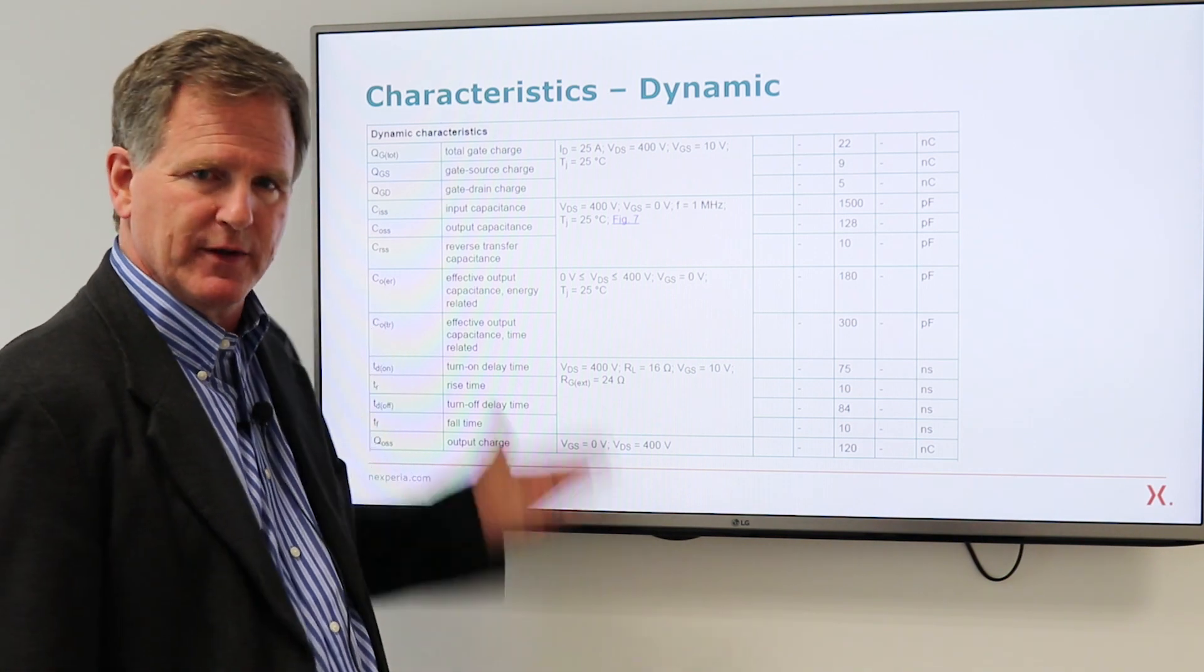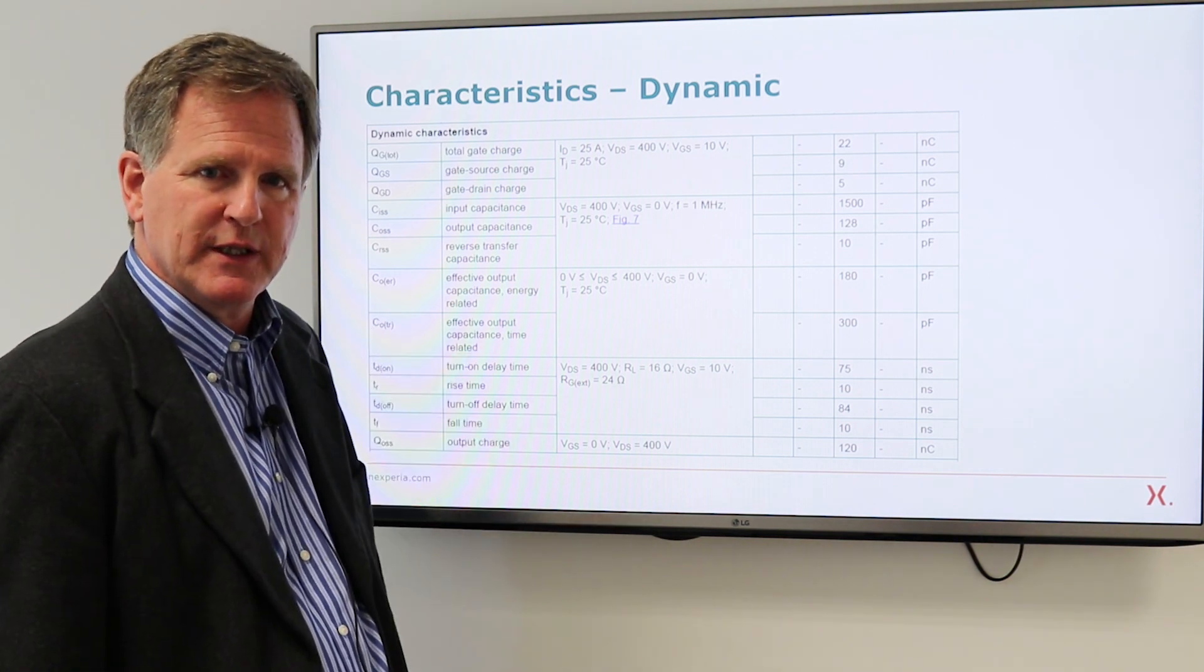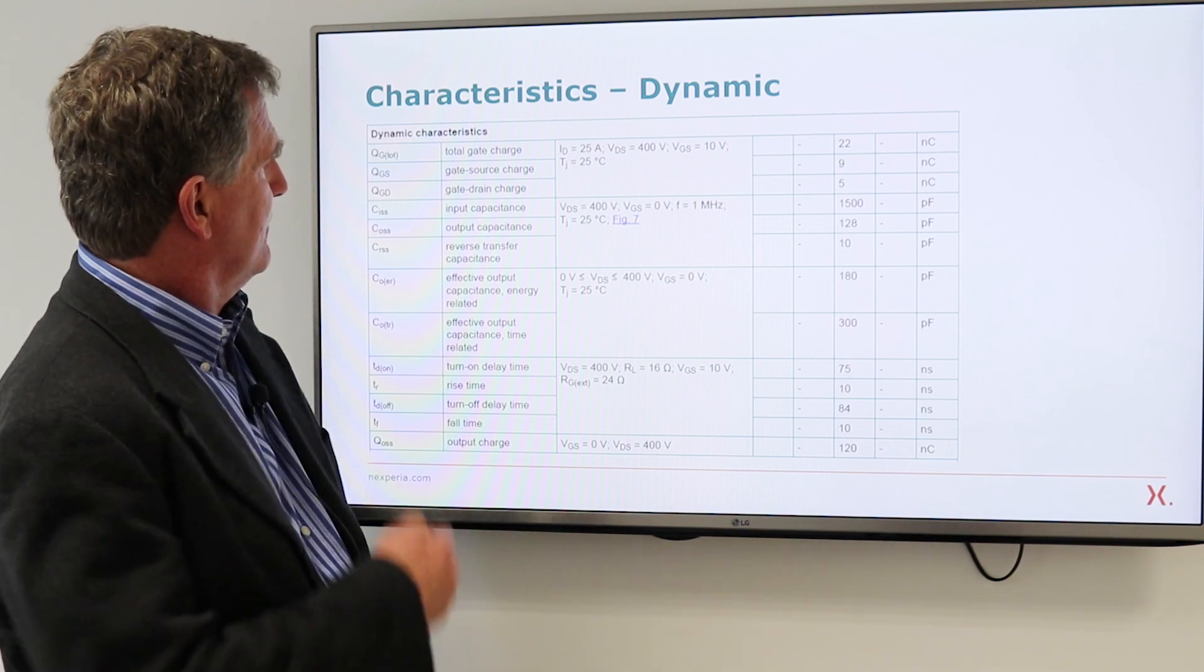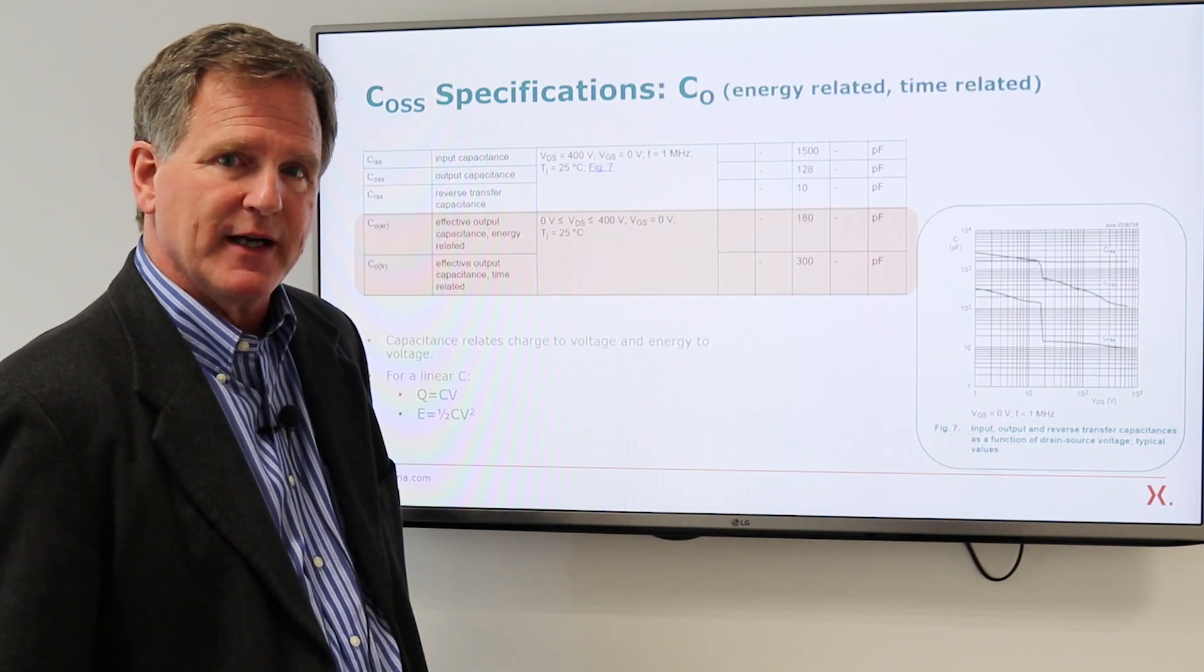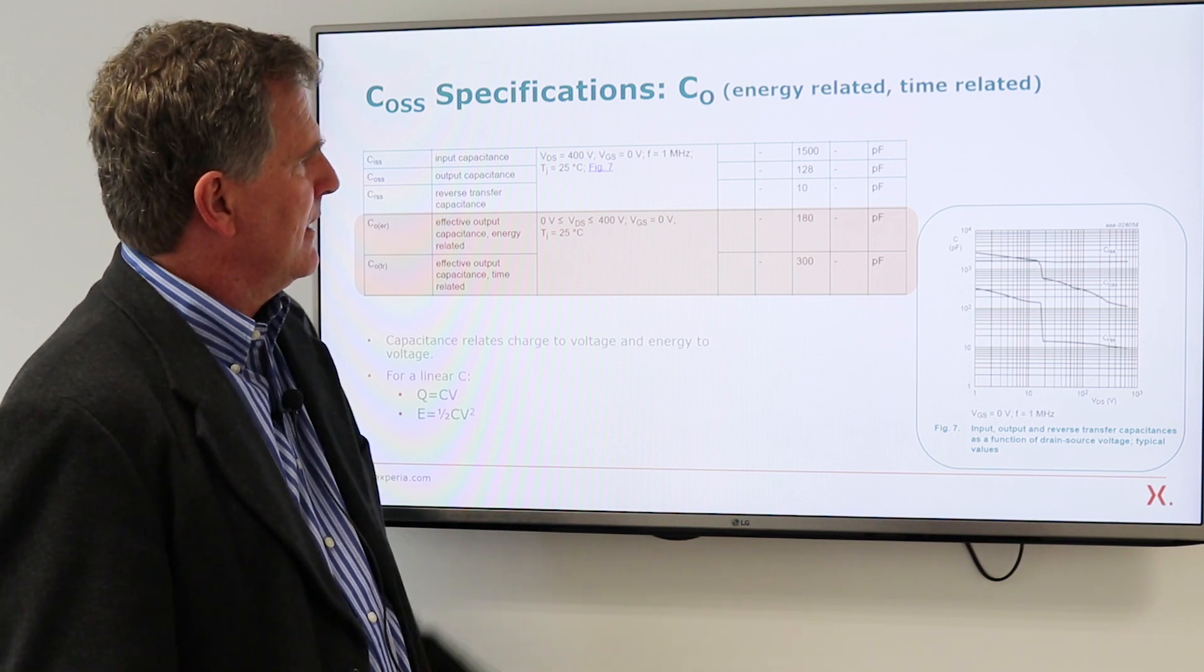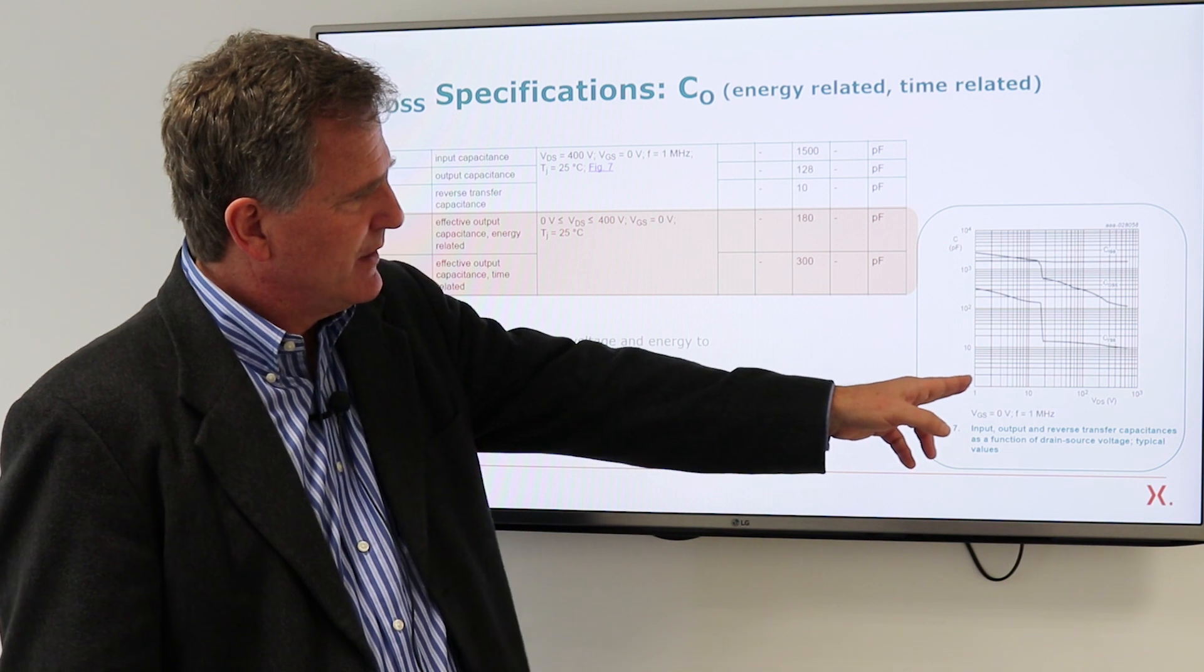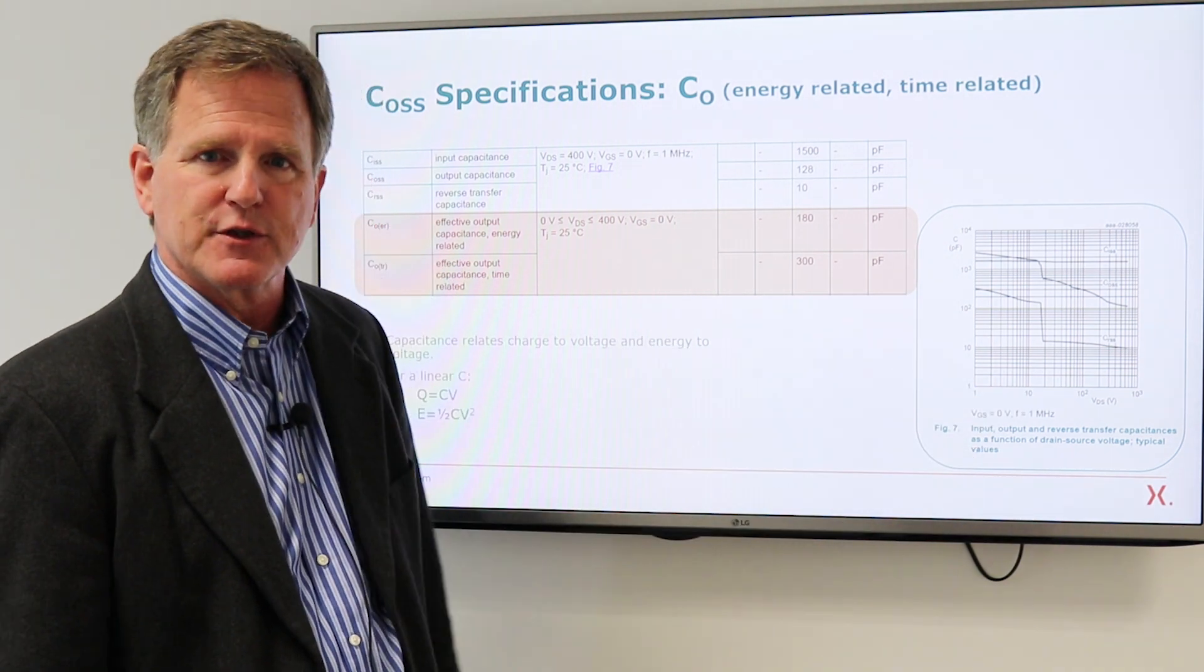Dynamic characteristics, we have a whole list of the normal or normal looking characteristics. Charge capacitance, delay times. We specify the usual small signal capacitances and we also give the chart of capacitance versus voltage.